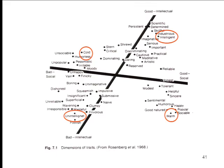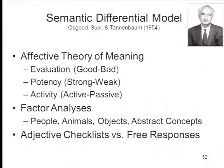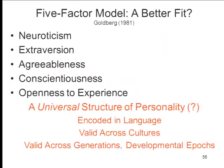More recently, the literature on personality assessment has suggested a more differentiated view: not just two factors but closer to five — the so-called Big Five personality traits. These are neuroticism, extraversion, agreeableness, conscientiousness, and openness to experience. These five dimensions have been extracted whenever anyone has analyzed a sufficient set of personality ratings — no matter who's doing it, what culture, what age. This has led researchers like Lewis Goldberg at the University of Oregon to argue that the Big Five is a universal structure of personality encoded in language, valid across cultures — from tribesmen in South America to workers in Germany — and across generations.